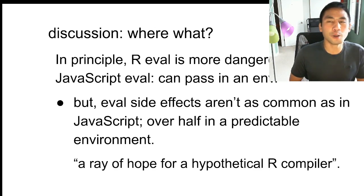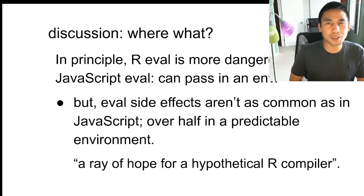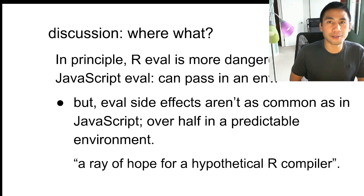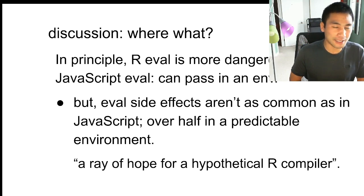Comparing R to JavaScript: in principle, R's eval is more dangerous because you can pass in an environment and cause havoc. However, side effects are actually more common in JavaScript than in R, and over half of R eval side effects are in a predictable environment. As the authors put it, this is a ray of hope for a hypothetical R compiler — it's still hard, but you can do something in many cases.